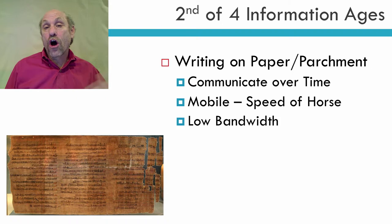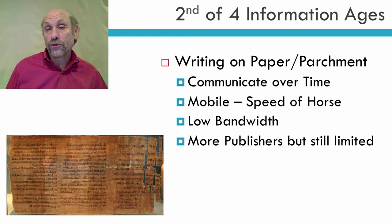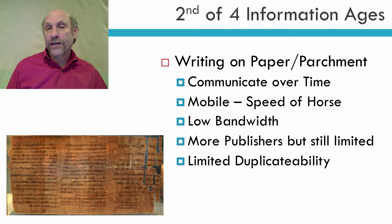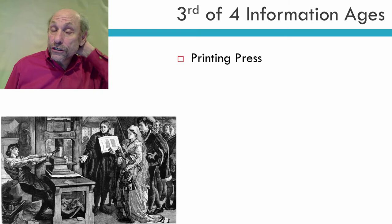You now could write long bits of information and move it around. And unlike cave paintings, now you had a lot more publishers, but it was still fairly limited — especially in the early days — in terms of who actually knew how to write. Writing was more duplicatable. If you look at the Torah, for example, the Jewish first five books, what you read today in synagogues and temples are exact copies of the original Torahs. But somebody had to physically copy it. And in the second information age, writing was under total control of the church or government.